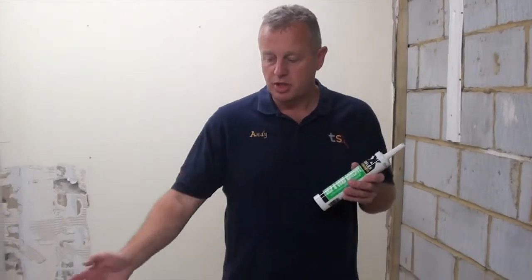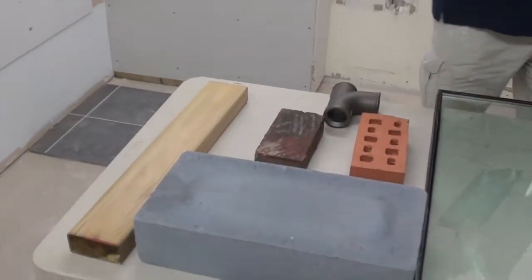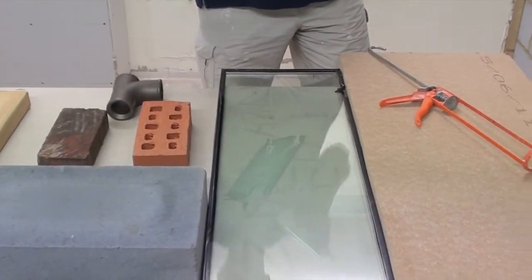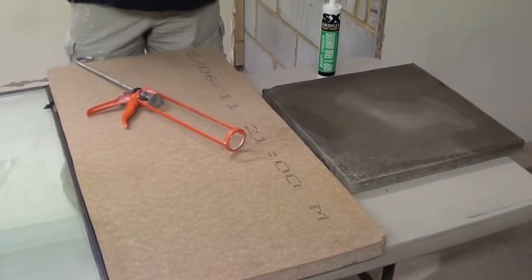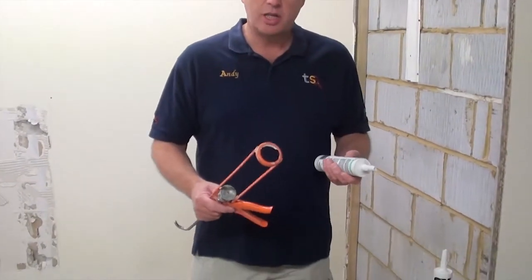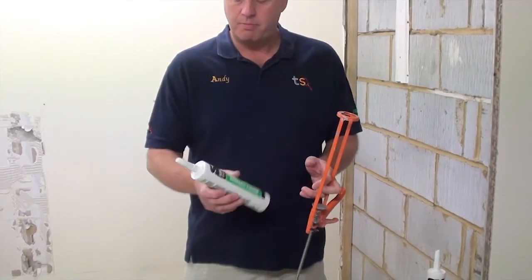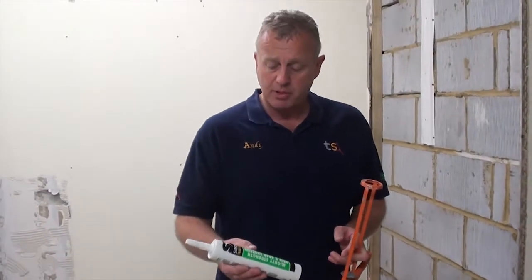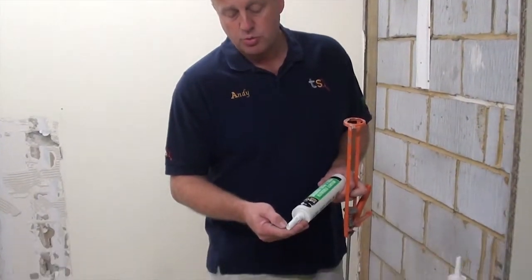Today we've got a selection of materials that we're going to use and stick on our wall. We've got some light materials, some timber, and some heavy materials to show you the bonding capability of this product. You'll need a silicone gun, and when you purchase your Grip and Grab adhesive, the nozzle's already pre-cut.